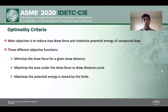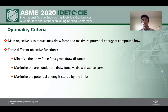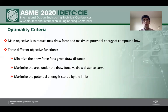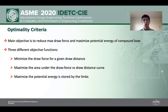I would like to mention about our optimization criteria. The main purpose of our optimization is to reduce the maximum force and to maximize the potential energy. We can write three different objective functions. First, we can minimize the draw force for a given draw distance, but the problem is that minimizing the draw force also minimizes the potential energy — so we need an additional constraint to keep potential energy high. The second option is to maximize the area under the draw force versus draw distance curve, which also gives us the potential energy.